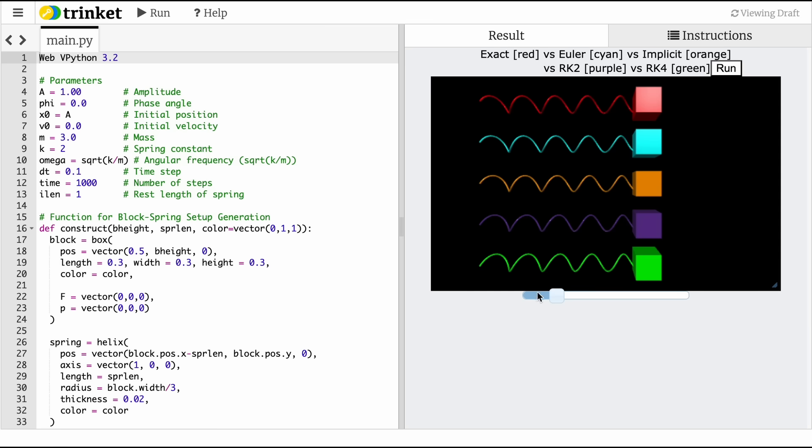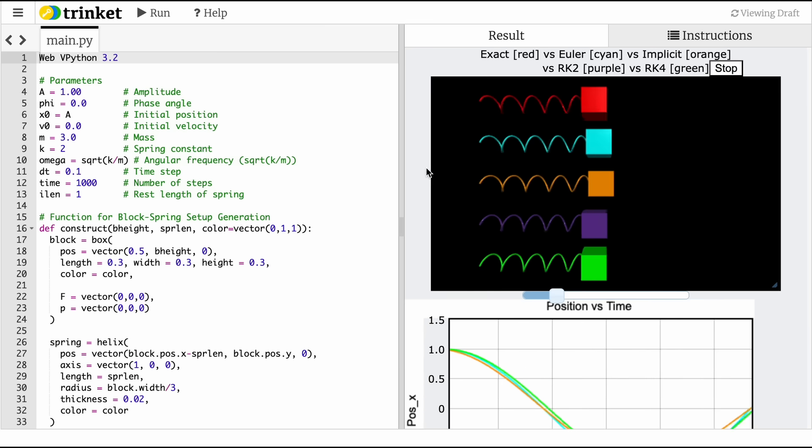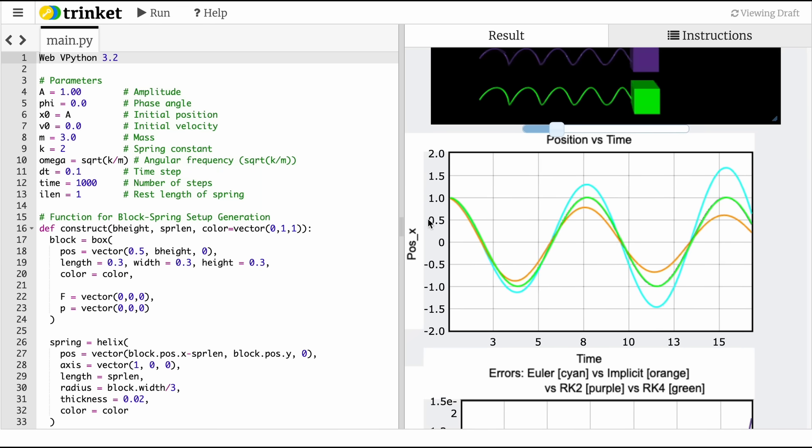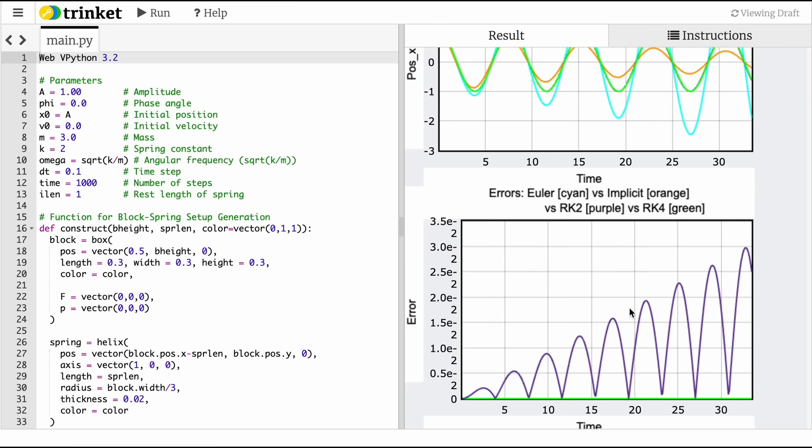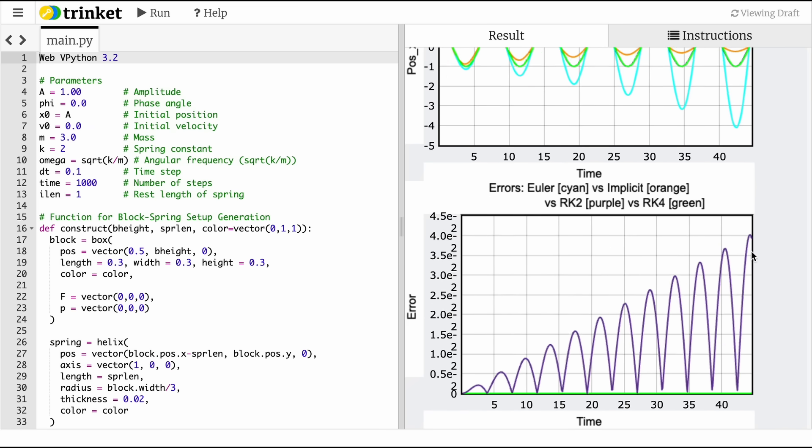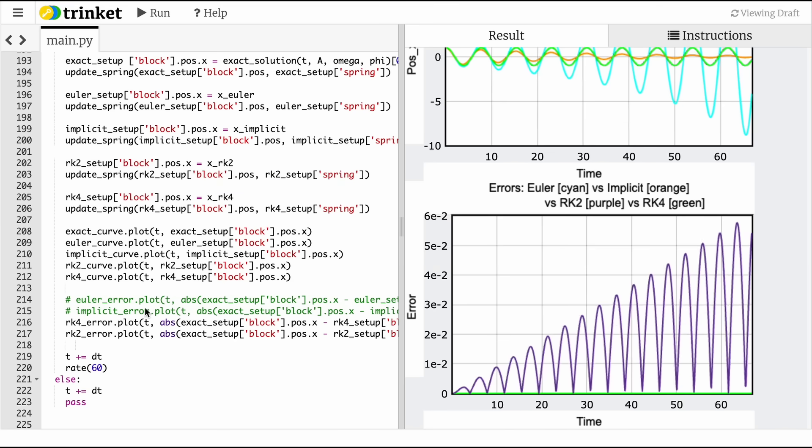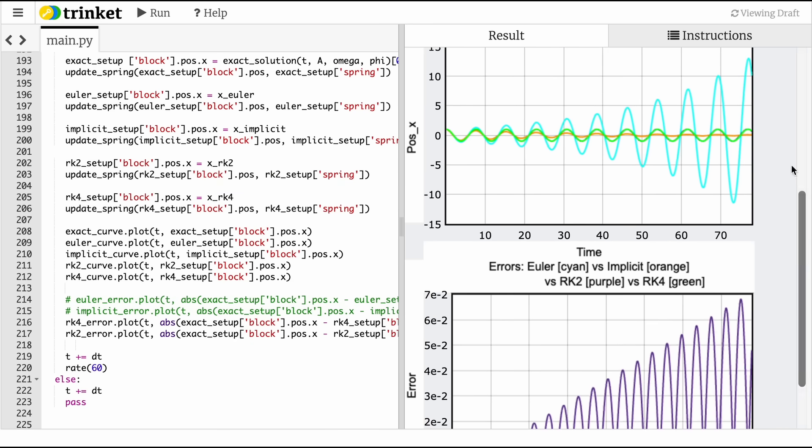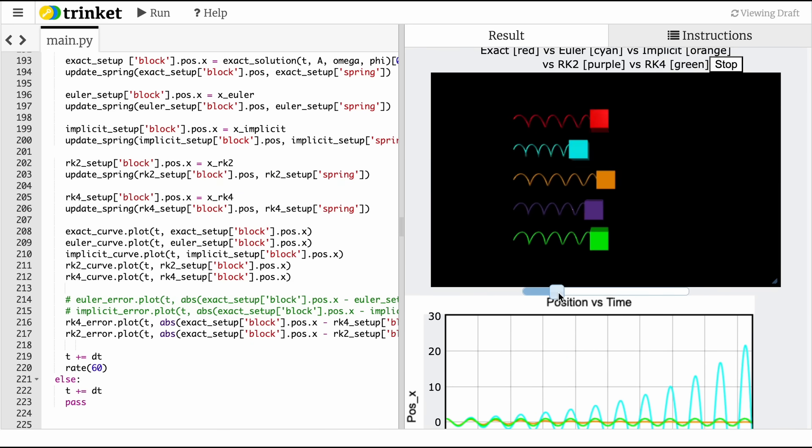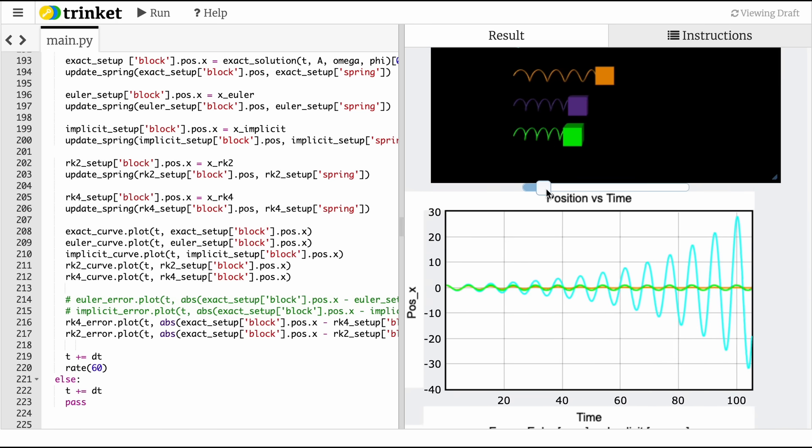This slider controls the time step. I click run, they'll run, and you can see I have a plot of the position versus the time graph along with a plot of error. This is just error for RK2 in purple and RK4 in green. The other errors I've just commented out—you can uncomment them if you want—but as you can see, their errors are pretty massive.